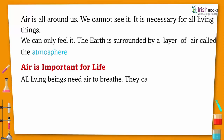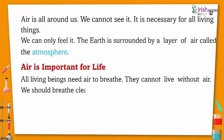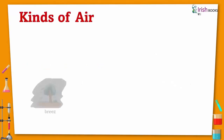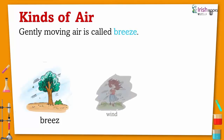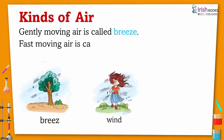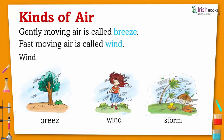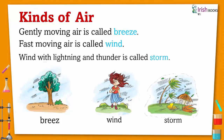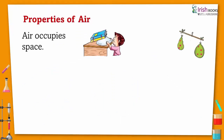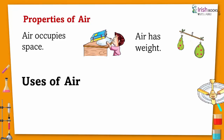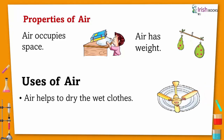All living things need air to breathe. They cannot live without air. We should breathe clean and fresh air. Kinds of air: gently moving air is called breeze. Fast moving air is called wind. Wind with lightning and thunder is called storm. Properties of air: air occupies space and air has weight.